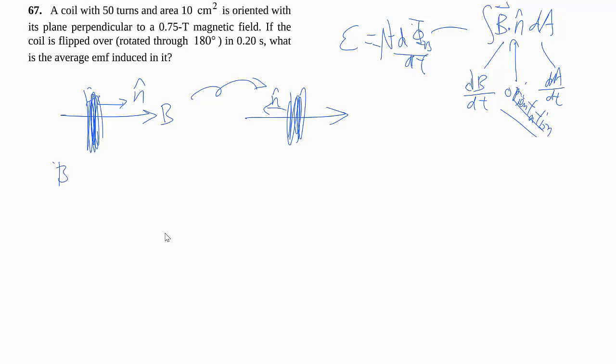Because the dot product here, because they're parallel, is simply just the magnitude of B, because magnitude of n is 1, being a unit vector. Whereas in this case, we get the negative because they're anti-parallel.